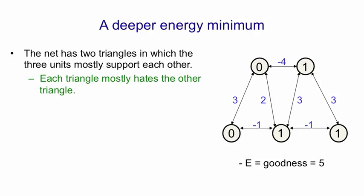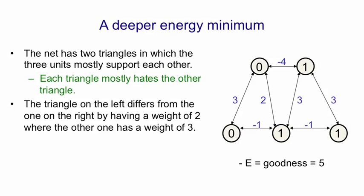If you look at that net, you can see the net's composed of these two triangles, in which the units mostly support each other, although there's a bit of disagreement at the bottom. And each of those triangles mostly hates the other triangle, via that connection at the top. The triangle on the left differs from the one on the right by having a weight of two, where the other one has a weight of three. So the triangle on the right will give you the deepest minimum.